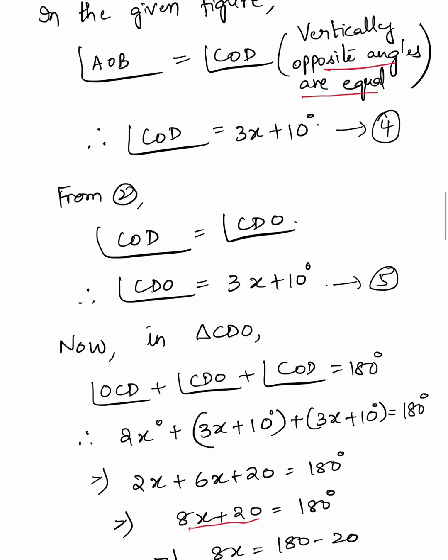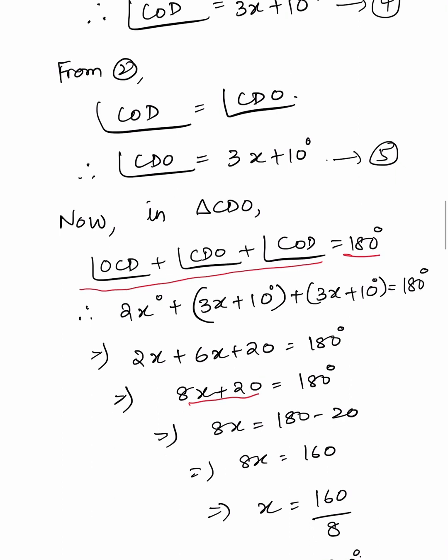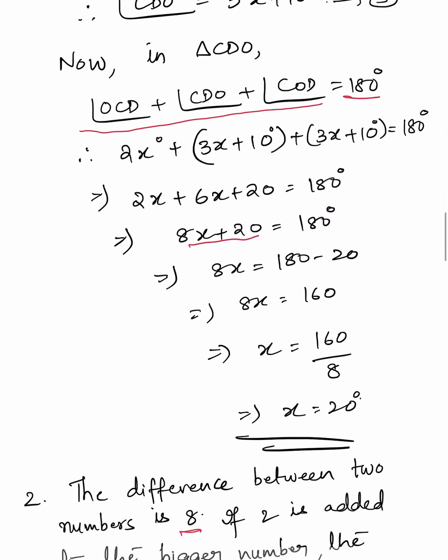In triangle CDO, applying the angle sum property: angle OCD plus angle CDO plus angle COD equals 180 degrees. So 2X plus 3X plus 10 plus 3X plus 10 equals 180, giving 2X plus 6X plus 20 equals 180, then 8X plus 20 equals 180, 8X equals 160, and X equals 160 divided by 8, which is 20 degrees.